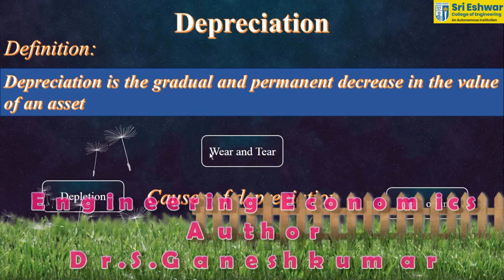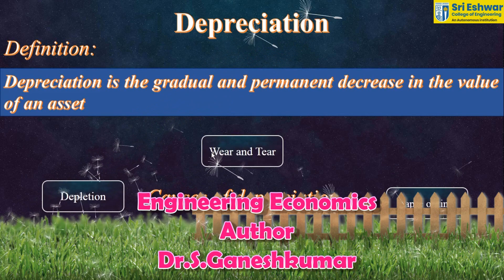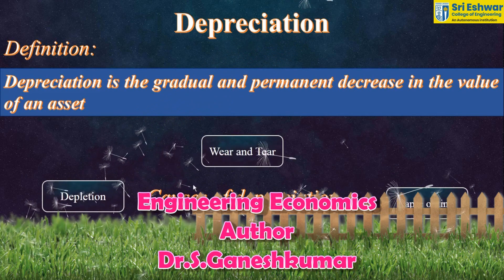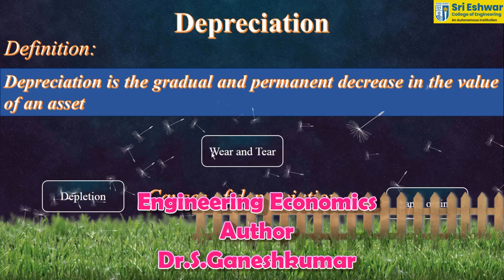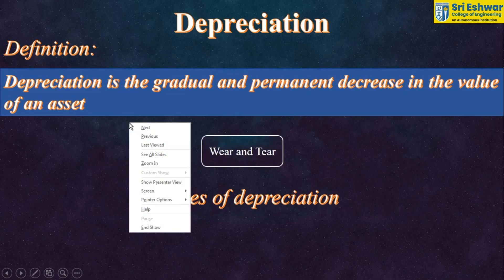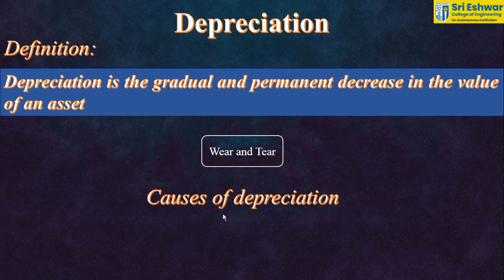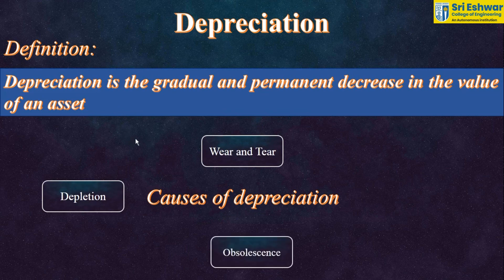Let us see the types of depreciation and what is meant by depreciation. Depreciation is a gradual and permanent decrease in the value of an asset. We have some causes for depreciation: wear and tear, depletion, obsolescence, and lapse of time.